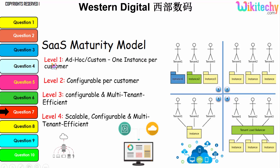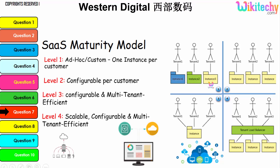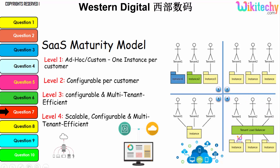You are able to see level one here — one instance per customer. Here is level two, configurable per customer, with different color-coded instances. Level three is configurable with multi-tenant architecture. Here you have a load balancer and a scalable, configurable, multi-tenant setup. This is your cloud computing network or environment.